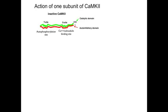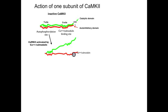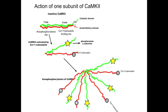Here is how the subunits of CAM kinase 2 work. First, calcium enters the cell and activates calmodulin. The calcium-activated calmodulin then binds onto the calcium-calmodulin binding site on the autoinhibitory domain, opening the subunit, which allows the S-site to be active and able to phosphorylate other proteins. With a large calcium signal, several subunits are opened by the large amount of calcium-activated calmodulin. The key feature is that the activated S-sites on each subunit can phosphorylate the autophosphorylation site on a neighboring subunit, but only if the neighboring subunit is open.